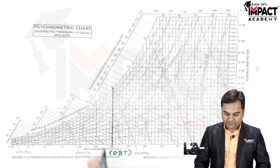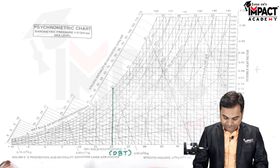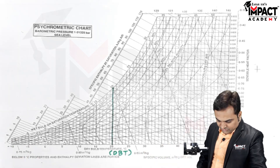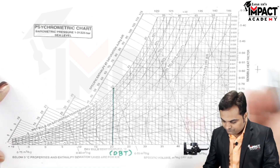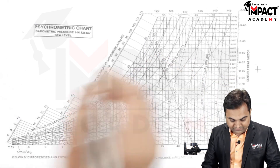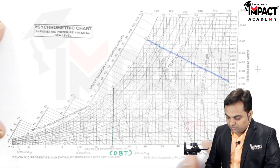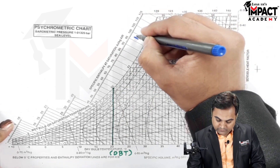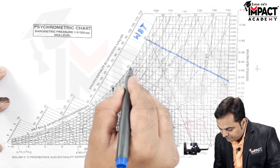The wet bulb temperature is also called the saturation temperature. It is indicated by inclined lines on the chart. For example, here we have an inclined line showing a wet bulb temperature (WBT) of 30 degrees Celsius, and another showing 25 degrees Celsius, and so on.